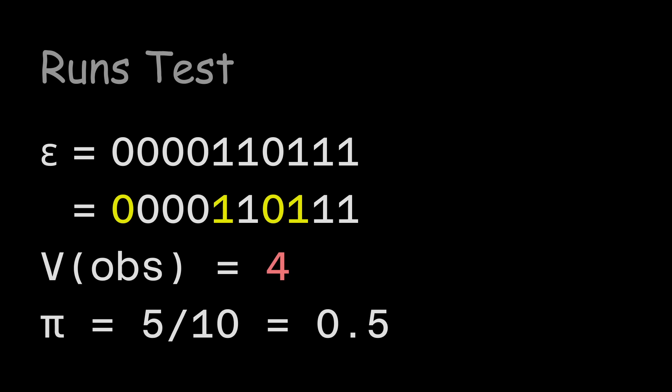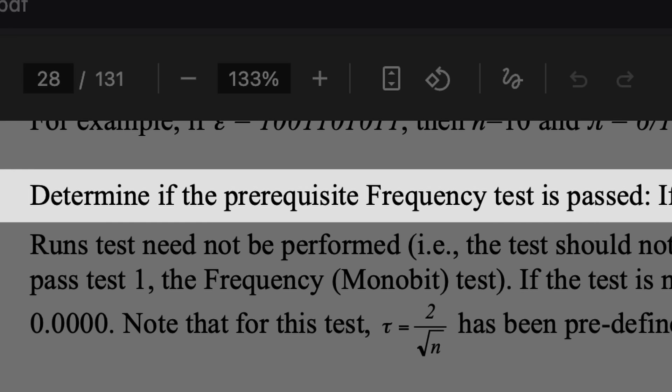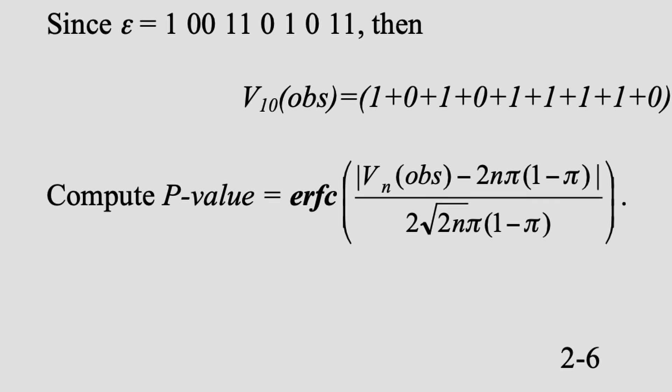But shouldn't it always be around 0.5, since the string is supposed to be random? In fact, passing the frequency test is specified as a prerequisite for performing the runs test. So why are we even calculating pi in the first place? Just call it 0.5 and the formula becomes much less cryptic.